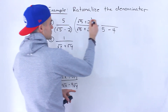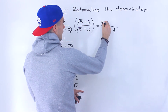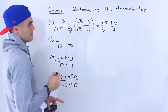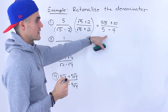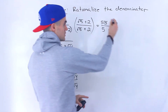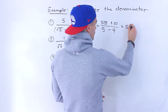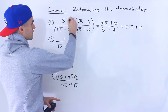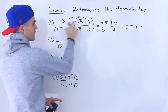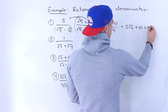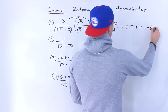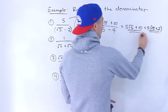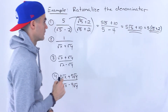Five times root five would be five root five, and then five times two gives us ten. Notice five minus four is just one, so we would just end up with five root five plus ten. You can also keep it factored instead of distributing that five inside the bracket, so that would be five bracket root five plus two. Either format is the final answer.